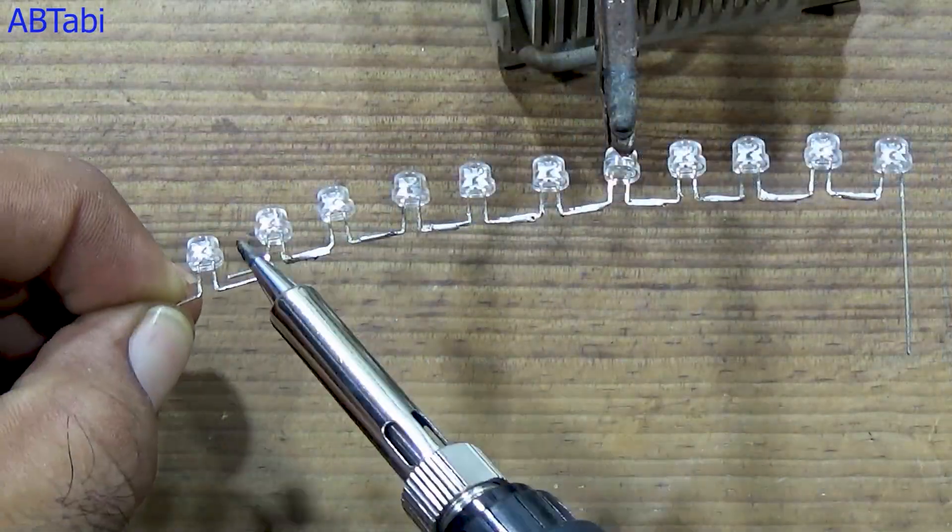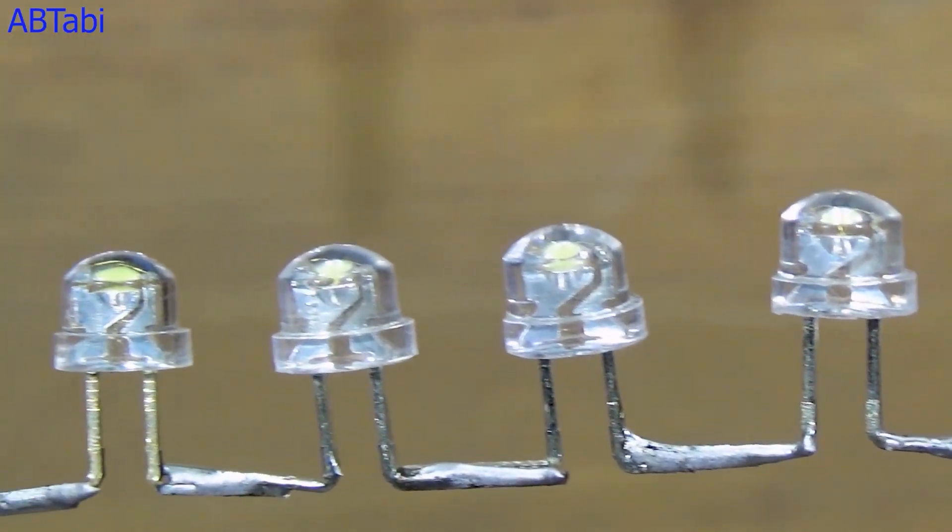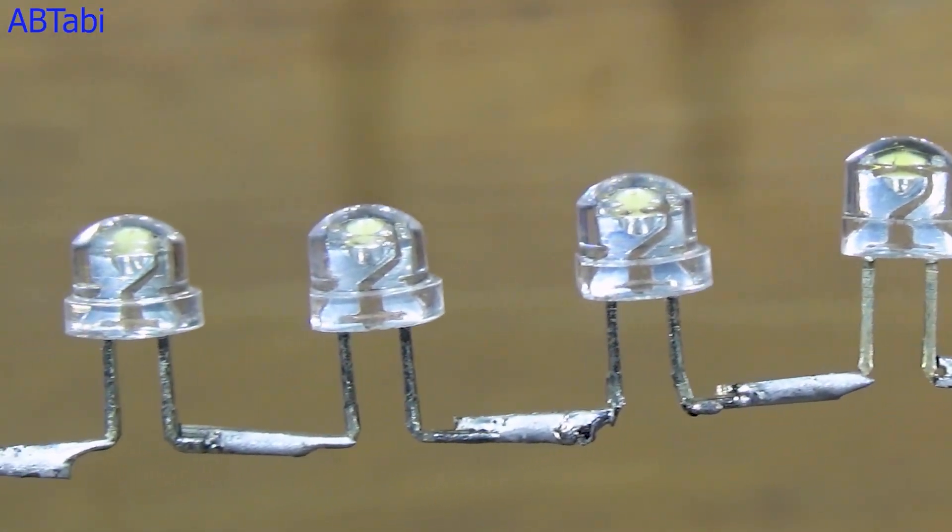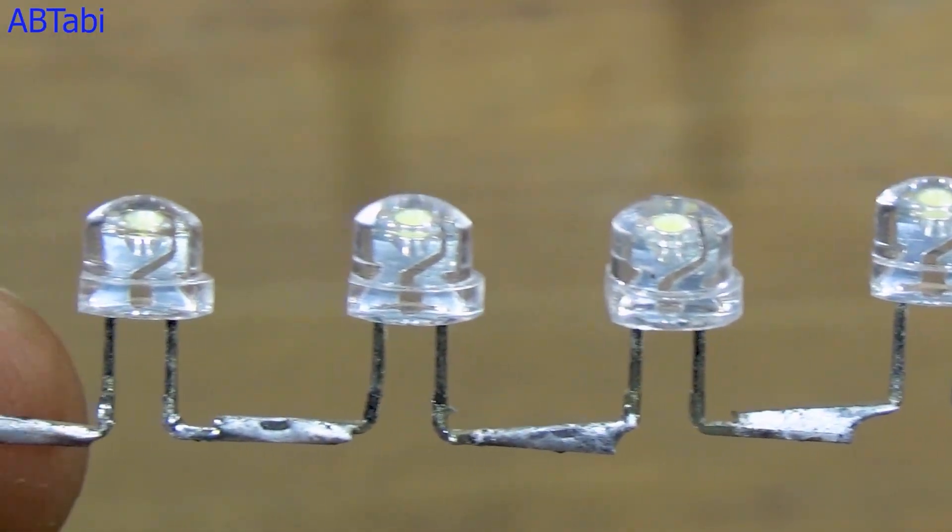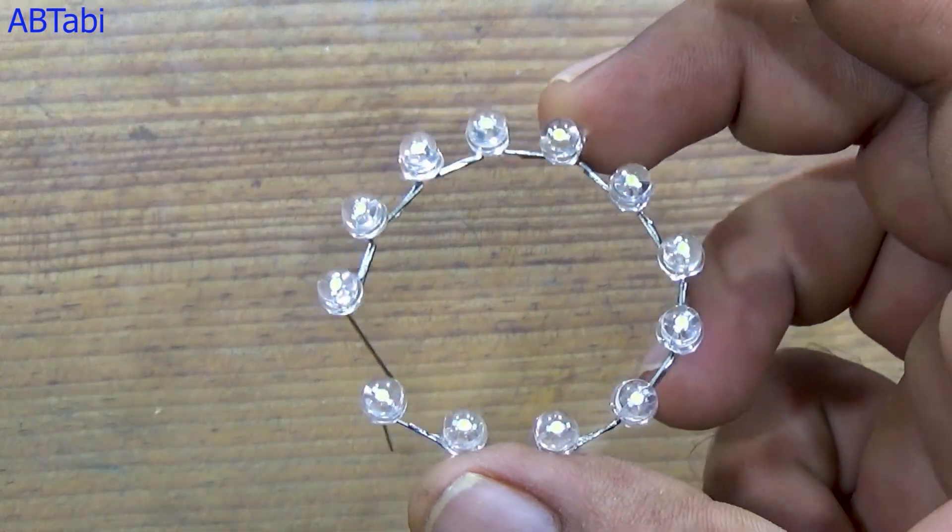Welcome back to the channel, where we learn simple and practical electronics projects step by step. In this video, we are making an LED light bulb circuit using 3-volt white LEDs. This circuit is simple, low-cost, and perfect for beginners.